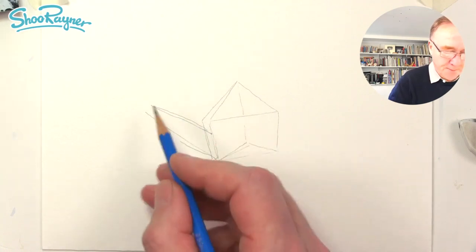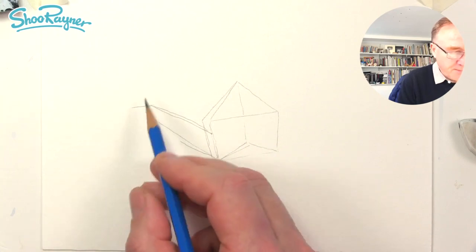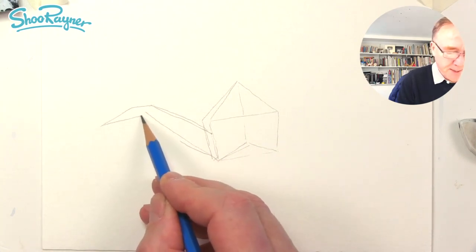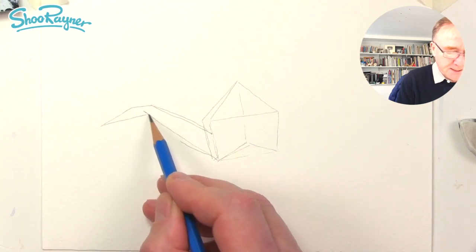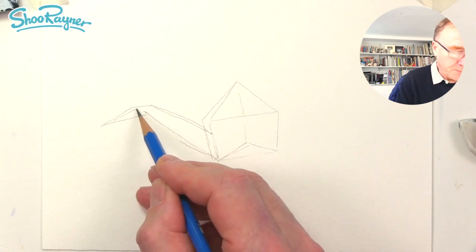Then it wants to go straight across there and then down into a point which will then come back to just underneath where this bottom line is.